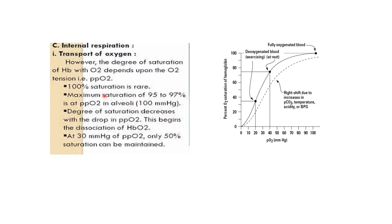The third part is internal respiration, which means the exchange of gases between RBCs — that means hemoglobin. The first aspect is transport of oxygen. The degree of saturation of hemoglobin with O₂ depends upon the oxygen tension. Saturation of hemoglobin refers to how much oxygen the blood can carry. If oxygen level is high, saturation will also be high. Simultaneously, hemoglobin concentration should also be high to increase the supply of oxygen in blood.